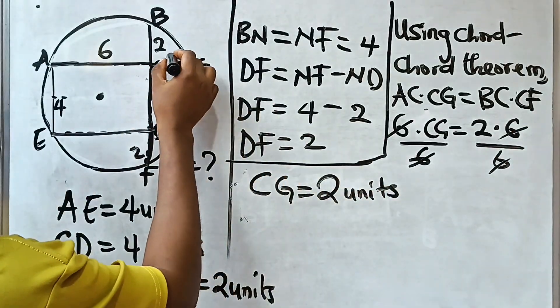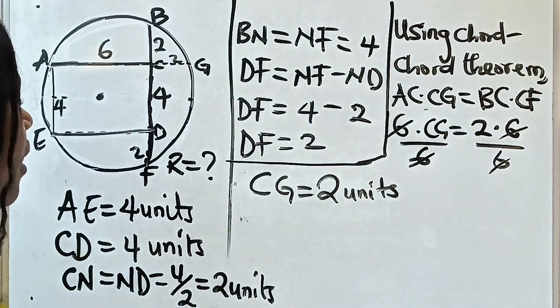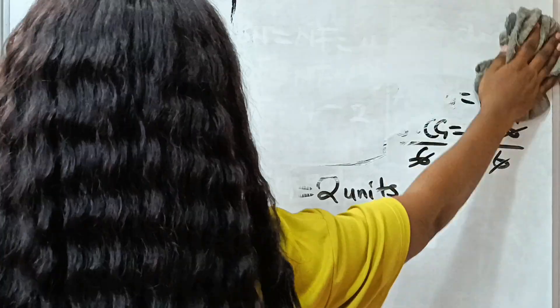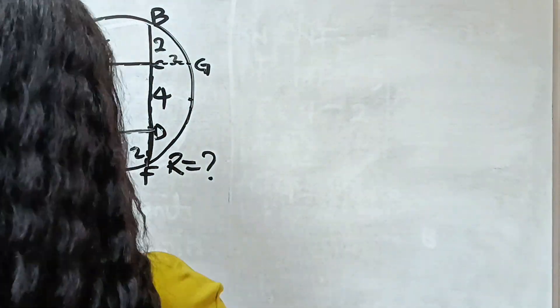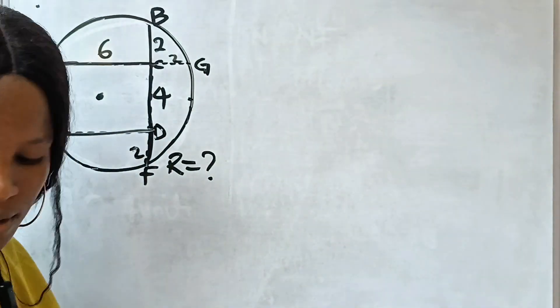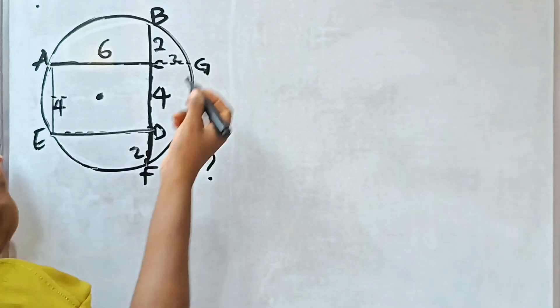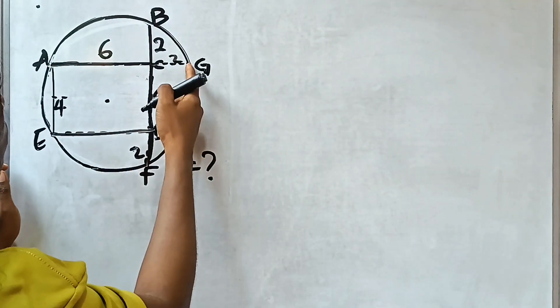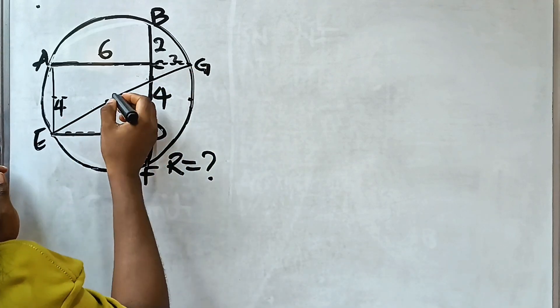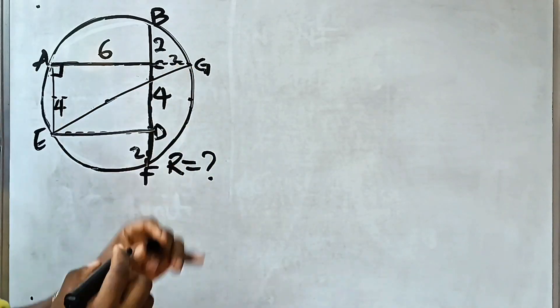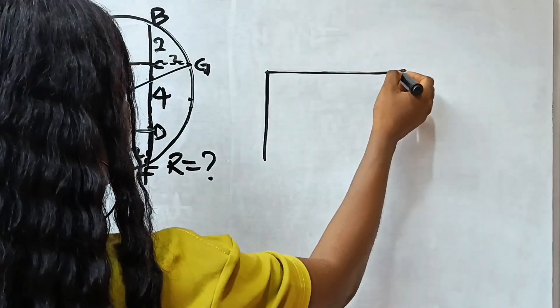So here also is 2. We are actually very close to our answer. Now, when you look at the diagram, let us join the center of this circle to this point. If we do that, then we have formed a right-angled triangle.